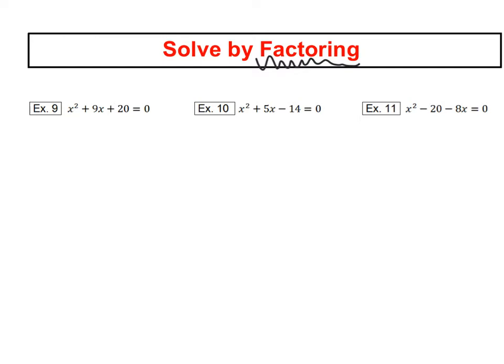First, and on all of the examples, you should look for a GCF. You remember what the GCF is? That's your greatest common factor. So you look at, in this case, all three terms. By the way, do you see how this is x squared plus 9x plus 20 equals 0?